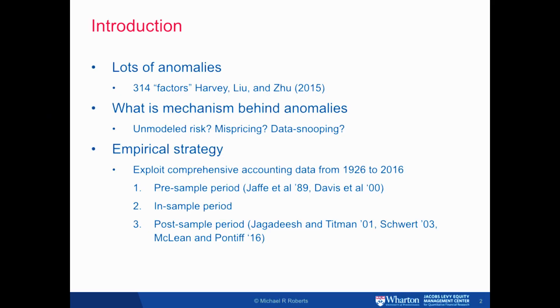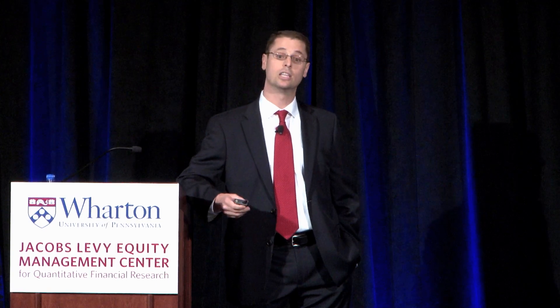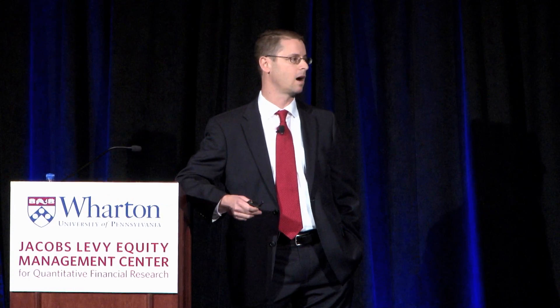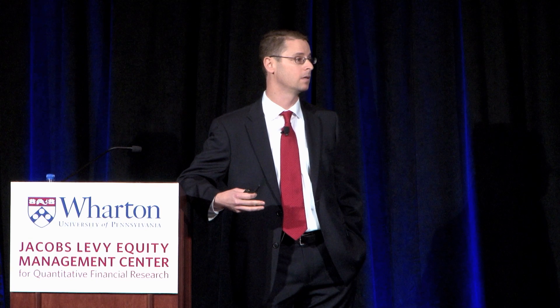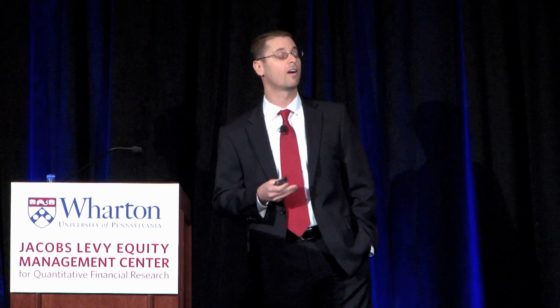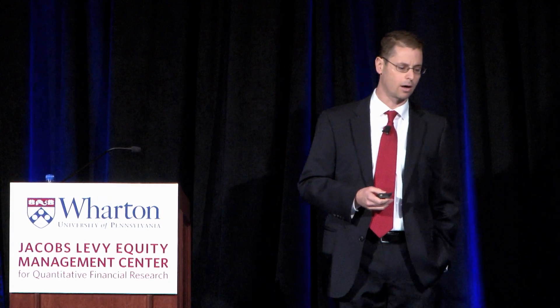There are a lot of anomalies — by anomalies I mean rejections of conventional asset pricing models, notably the CAPM and Fama-French three-factor model. My former colleague Cam Harvey and co-authors counted 314, but I've heard anywhere between 100 and 400. The question we're going to tackle is: what economic mechanism is driving these violations of asset pricing models?